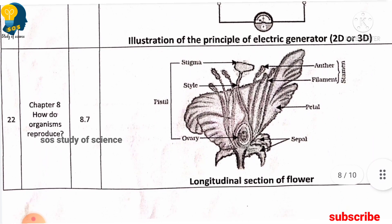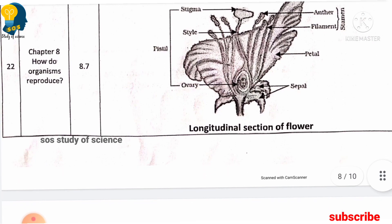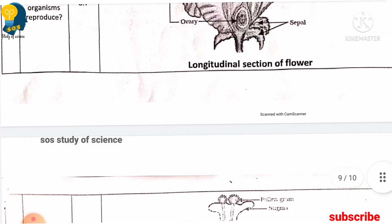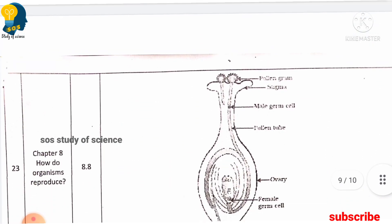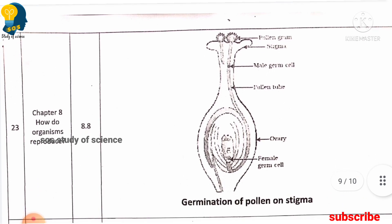Moving to biology, you must learn the longitudinal section of a flower from the lesson how do organisms reproduce — this diagram is very important. Another diagram from the same lesson is germination of pollen on stigma.